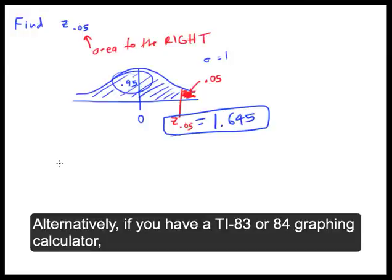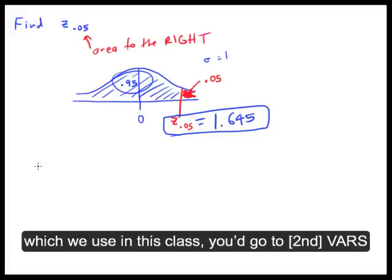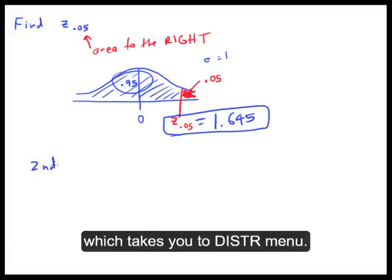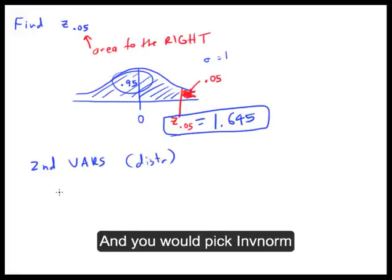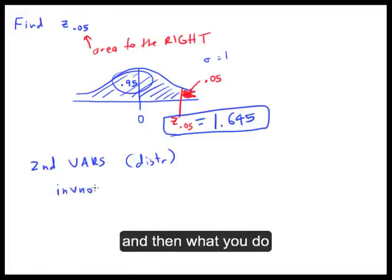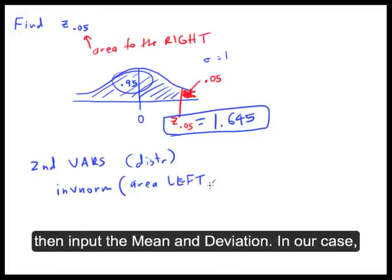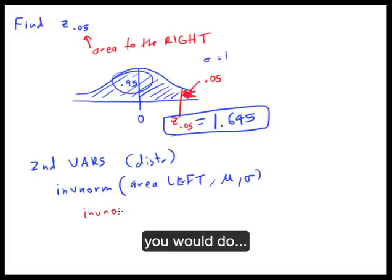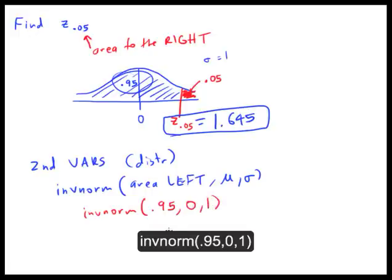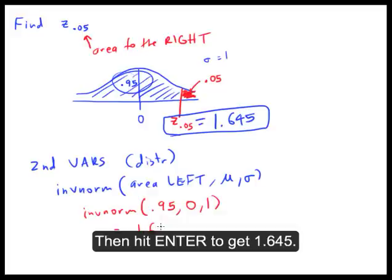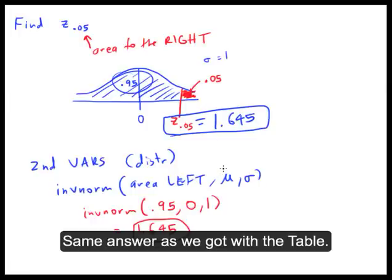Alternatively, if you have a TI-83 or 84 graphing calculator, you would go to 2nd VARS, which takes you to the distribution menu, and you would pick inverse norm. You input the area to the left, then the mean, then the deviation. So in our case, you would do invNorm with area to the left of 0.95, mean of 0, deviation of 1, and then hit enter. You'll get 1.644 and some change — if you round it, it's 1.645, the same answer we got with the table.